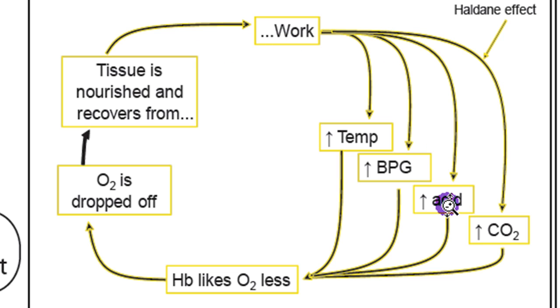Tissue that's working will also increase its acid. Metabolism creates protons, and that increases the acidity or decreases the pH. As pH decreases around hemoglobin, its affinity for oxygen decreases, which means it's going to drop off that oxygen, and the tissue will be nourished.